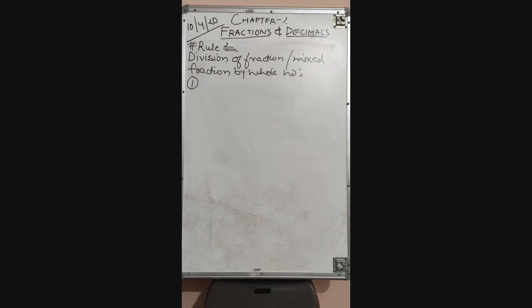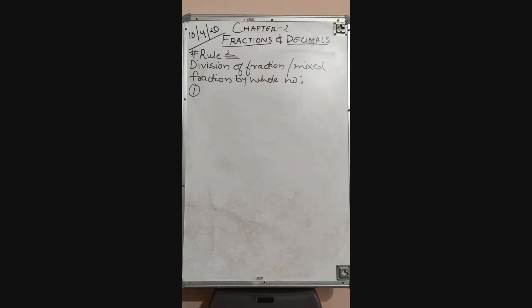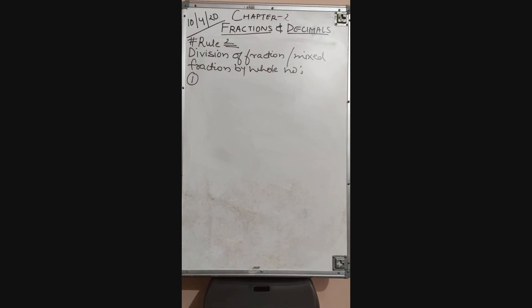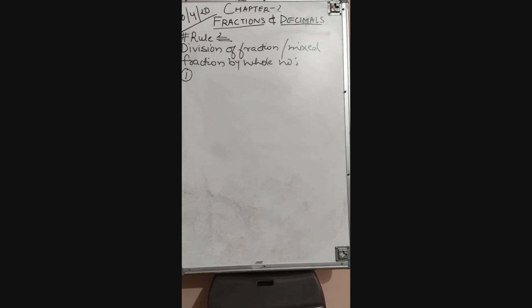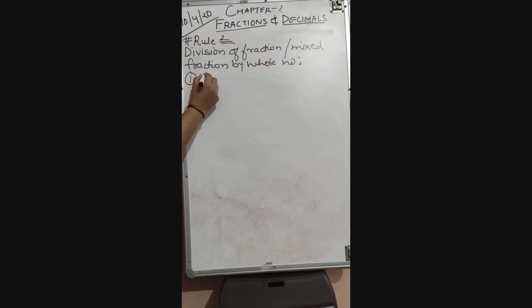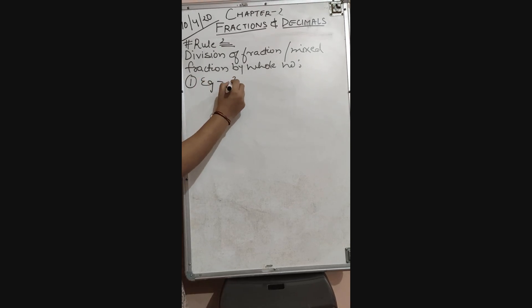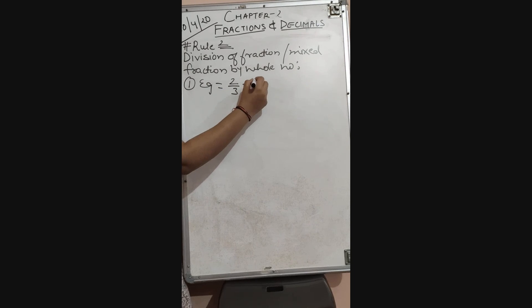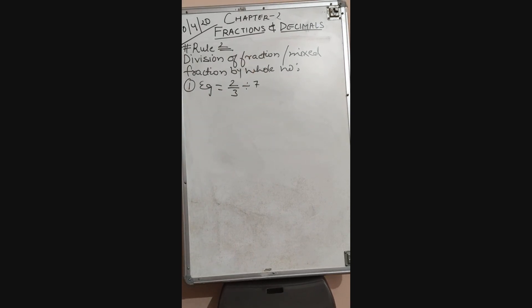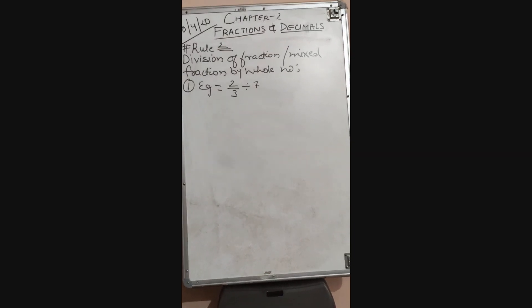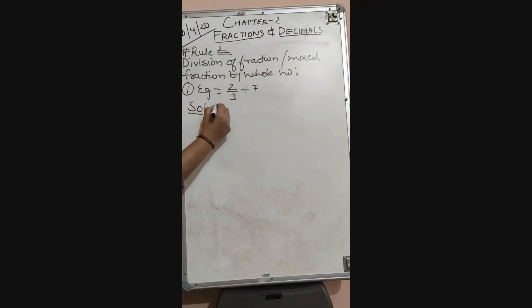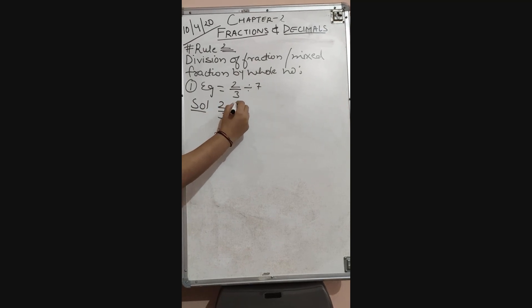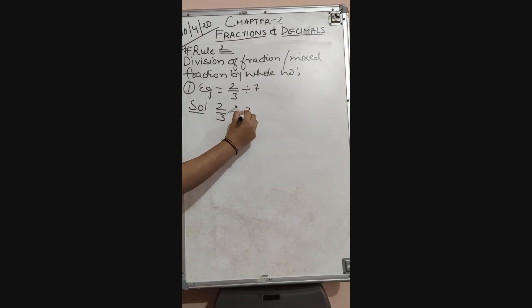Condition 1: to divide a fraction by a whole number, multiply that fraction by the reciprocal of the whole number. For example, 2 upon 3 divided by 7. We write 7 as 7 upon 1 and then we multiply 2 upon 3 by the reciprocal, which is 1 upon 7.